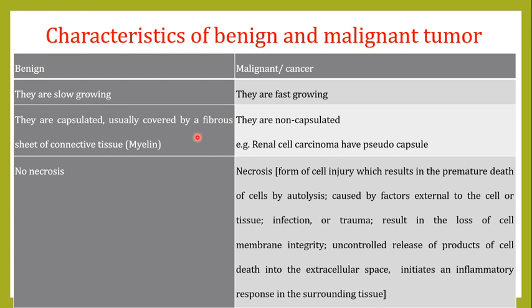One reason benign tumors are slow growing is that they are capsulated — covered by a fibrous sheet of connective tissue. This fibrous sheet provides boundaries for growth, so benign tumors are only allowed to grow within a specific area. In contrast, malignant tumors are non-capsulated, meaning they can grow in any direction because there is no capsule to restrict their growth.